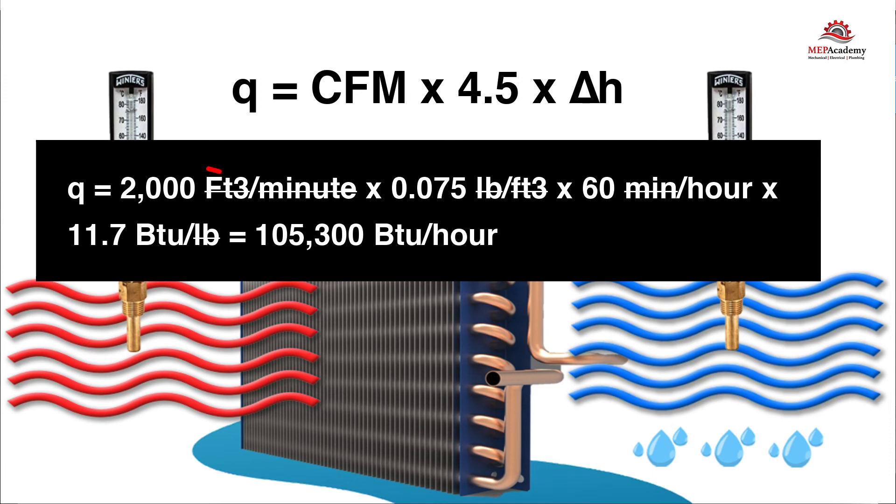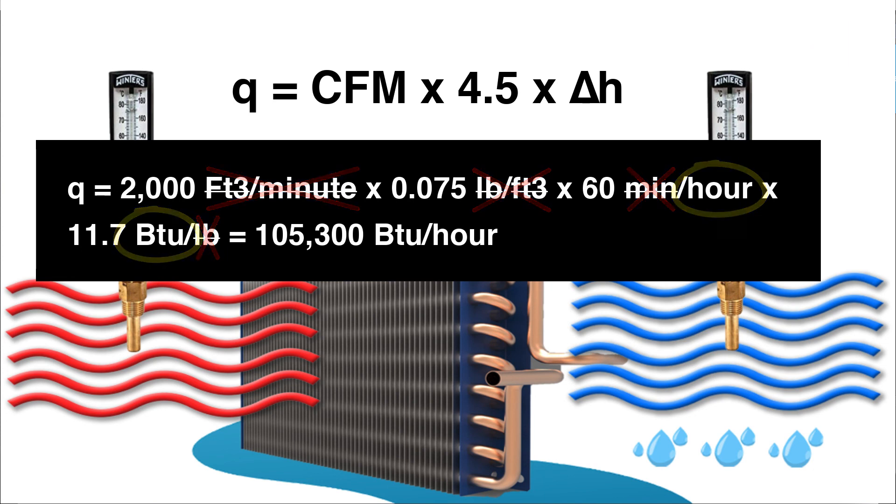Q equals 2,000 cubic feet per minute times 0.075 pounds per cubic foot times 60 minutes per hour times 11.7 BTUs per pound equals 105,300 BTUs per hour. If you liked that video, please give it a thumbs up and subscribe to our channel. Thank you.